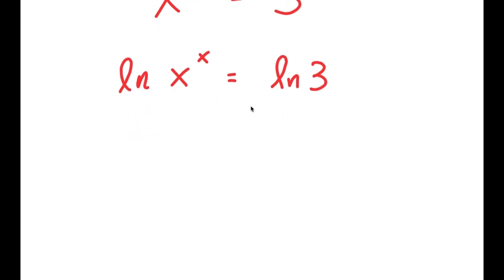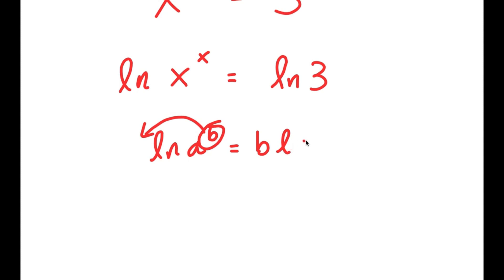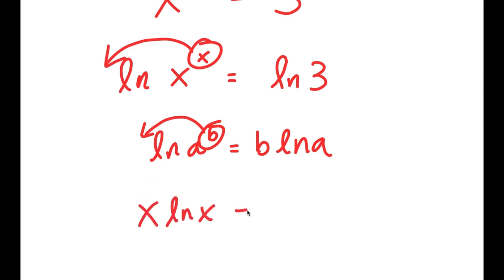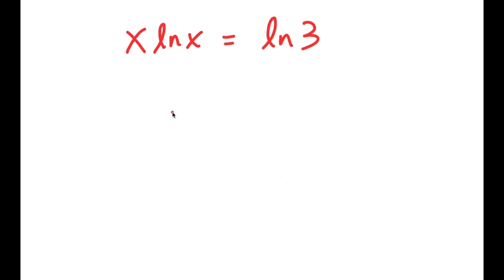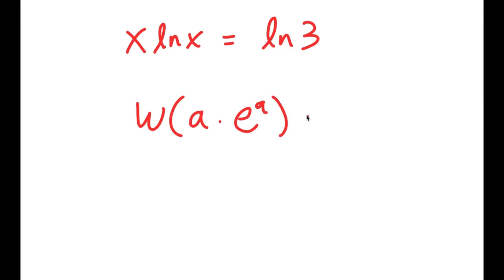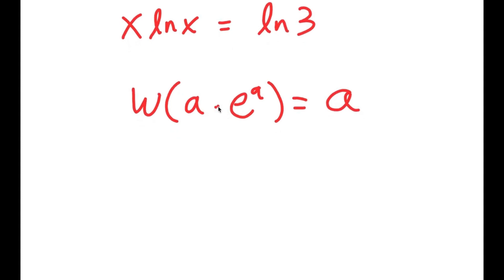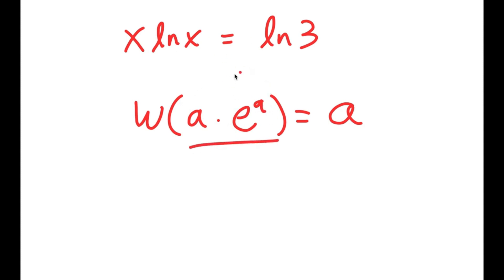An important property of logarithms is that if I have something in the form ln of a to the power of b, I can move the exponent b to the front, so this turns into b times ln a. So in this case I have ln of x to the power of x, and I can move x to the front, so I get x times ln x is equal to ln 3. Now I'm going to use an important formula called the Lambert W formula, and it states that if I take W of something in the form a times e to the power of a, then this is equal to a.